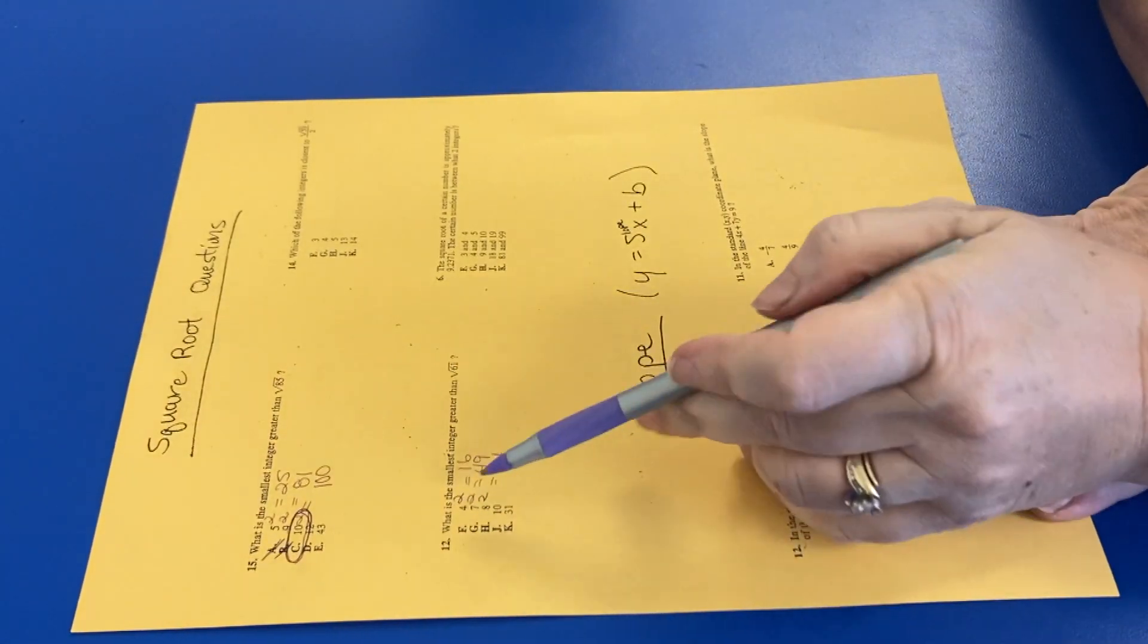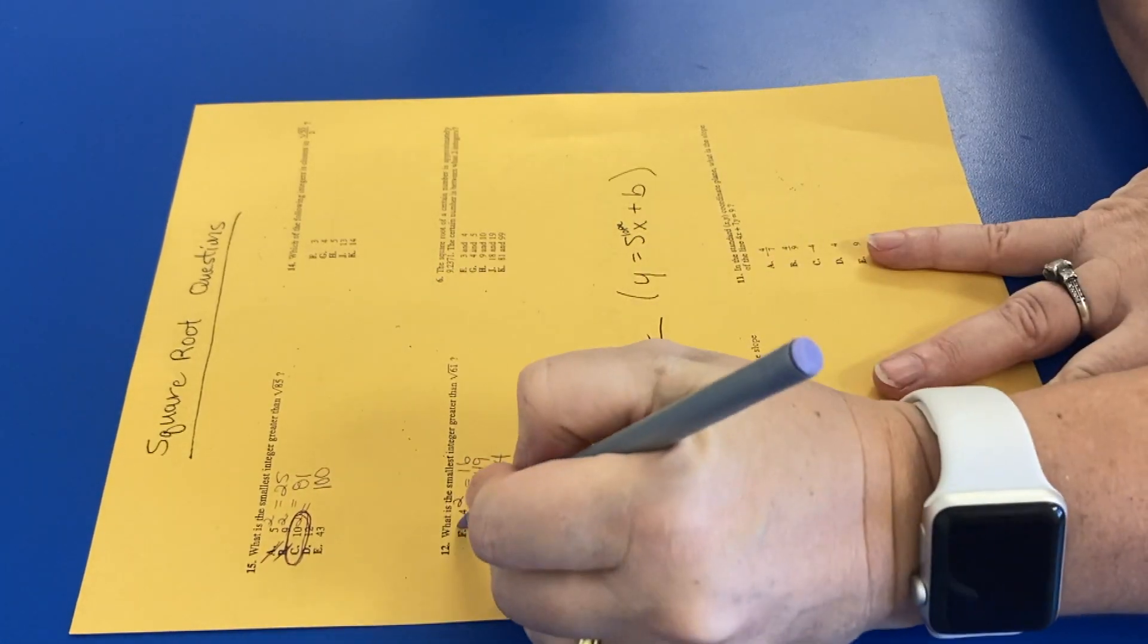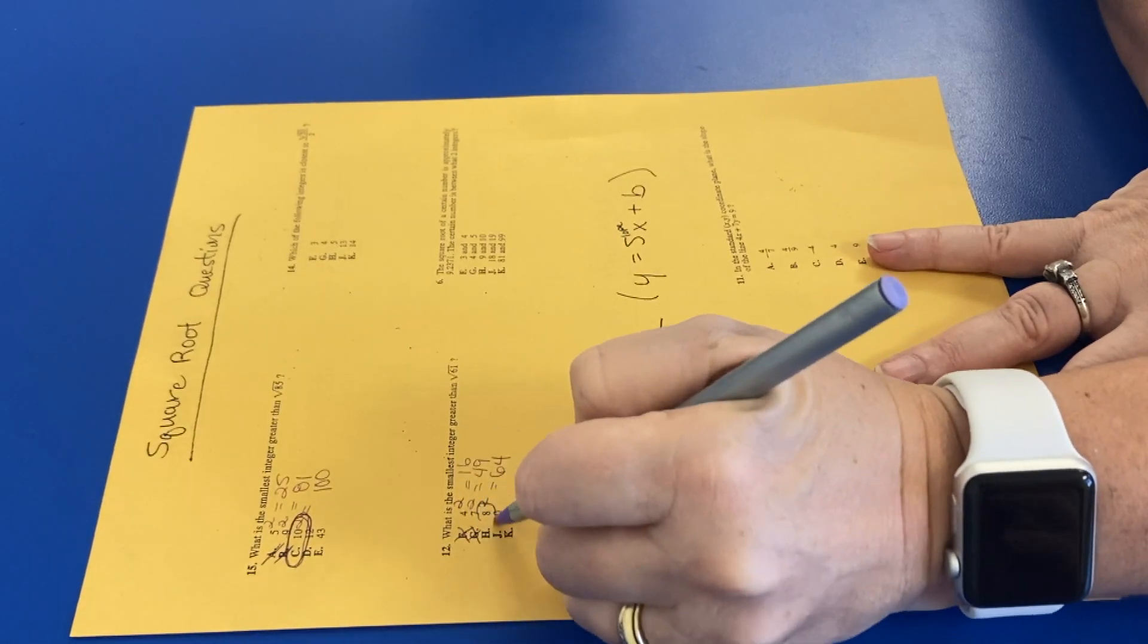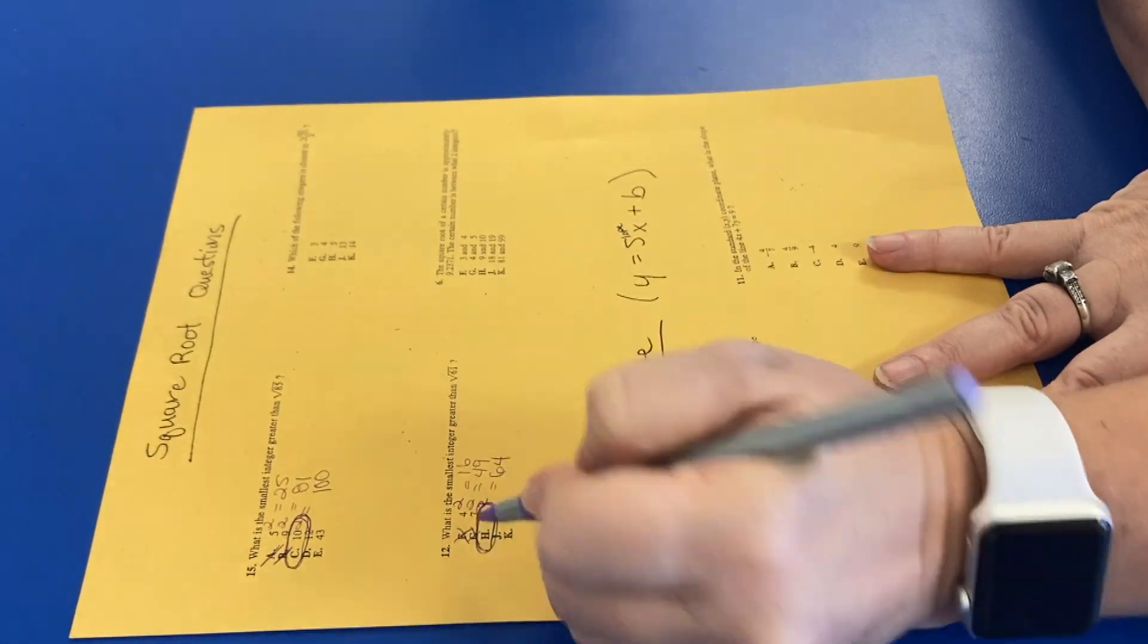Okay, what is the smallest integer greater than 61? Cross out that, cross out G, and it would be H. Answer would be H.